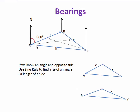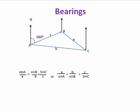When we've drawn our triangle and we know an angle and the opposite side, we can use the sine rule. The sine rule is used to find the size of an angle or the length of a side. If we know two angles and a side, we use the sine rule. The formula is: sine A over a equals sine B over b equals sine C over c. Usually we only use two of these at a time.